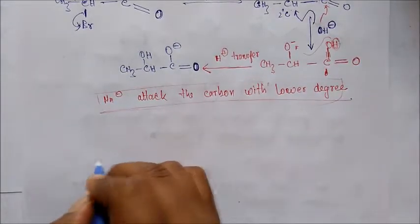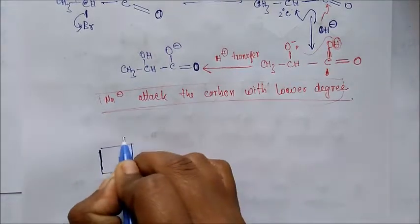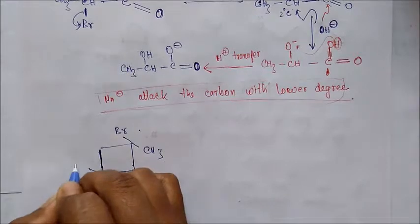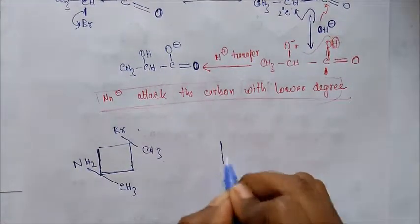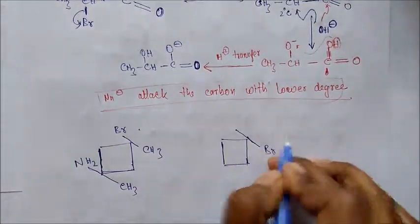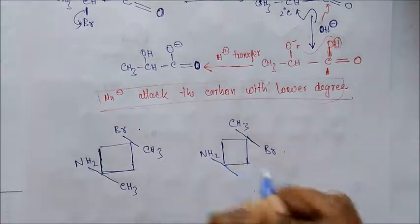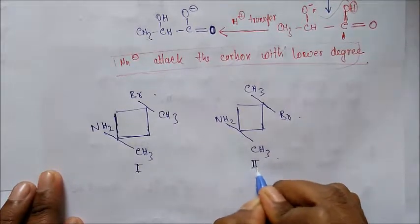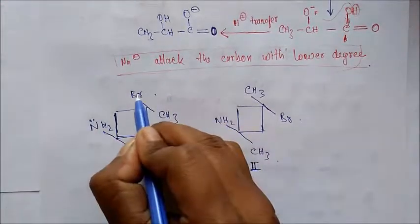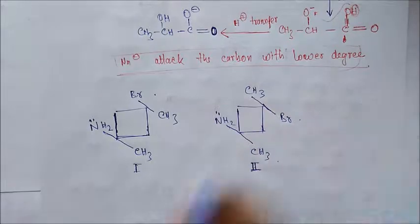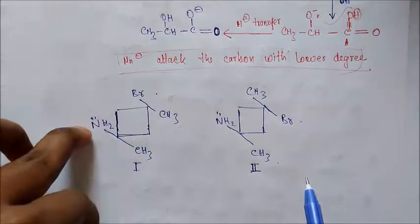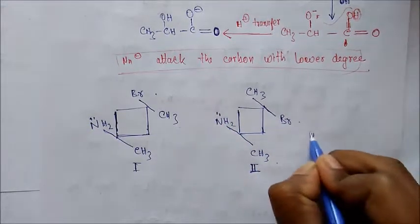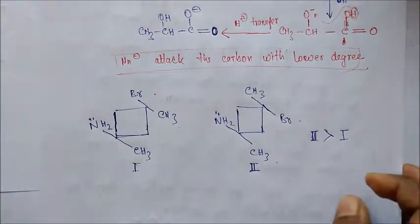For a rate comparison example: we have two substrates, both with CH₃, Br (leaving group), NH₂, and CH₃. In substrate 1, the lone pair (NH₂) and leaving group (Br) are on the same side. In substrate 2, they are on the anti side. Since the second condition for NGP requires the nucleophile and leaving group to be anti to each other, the second substrate gives a higher rate of reaction.